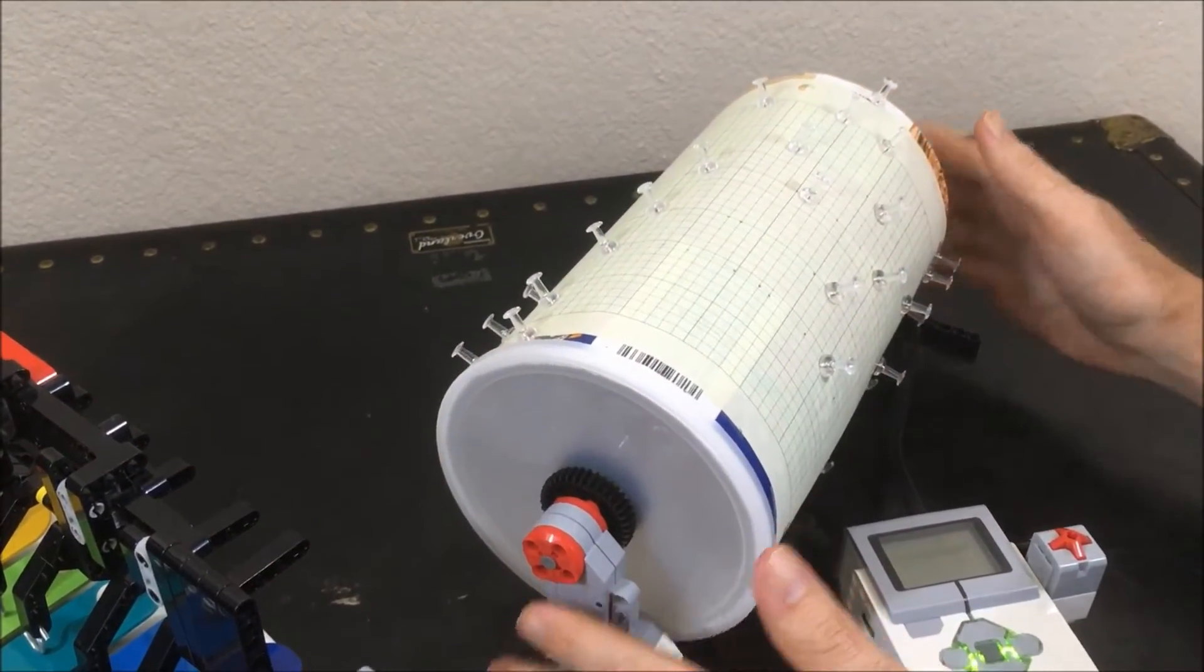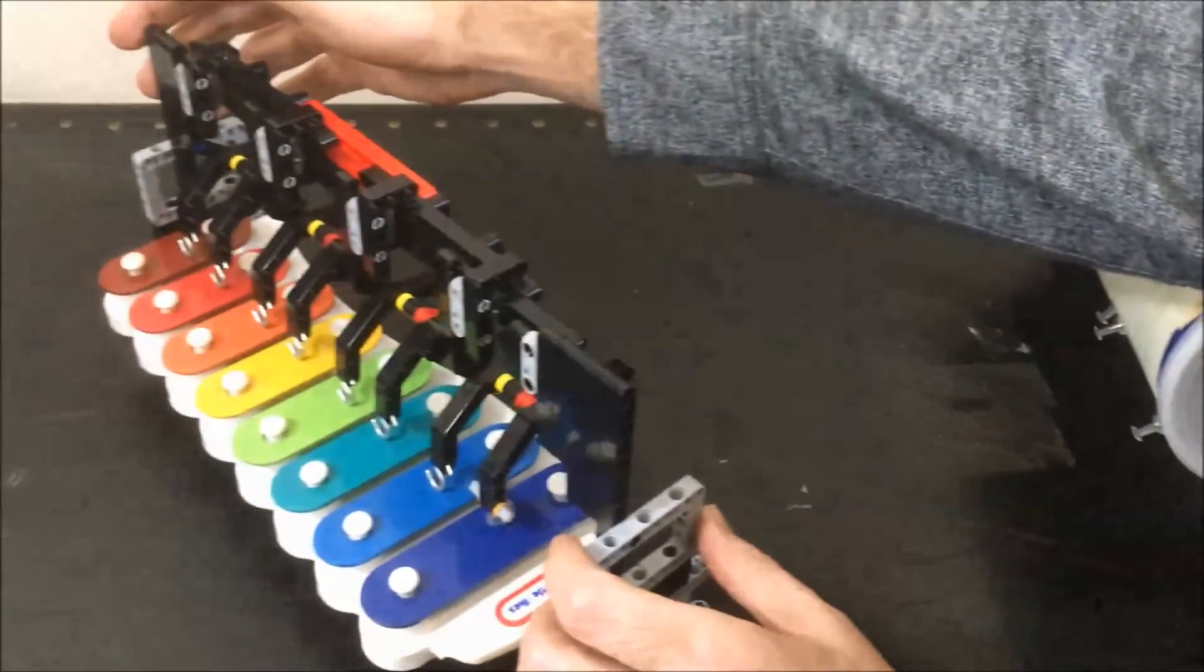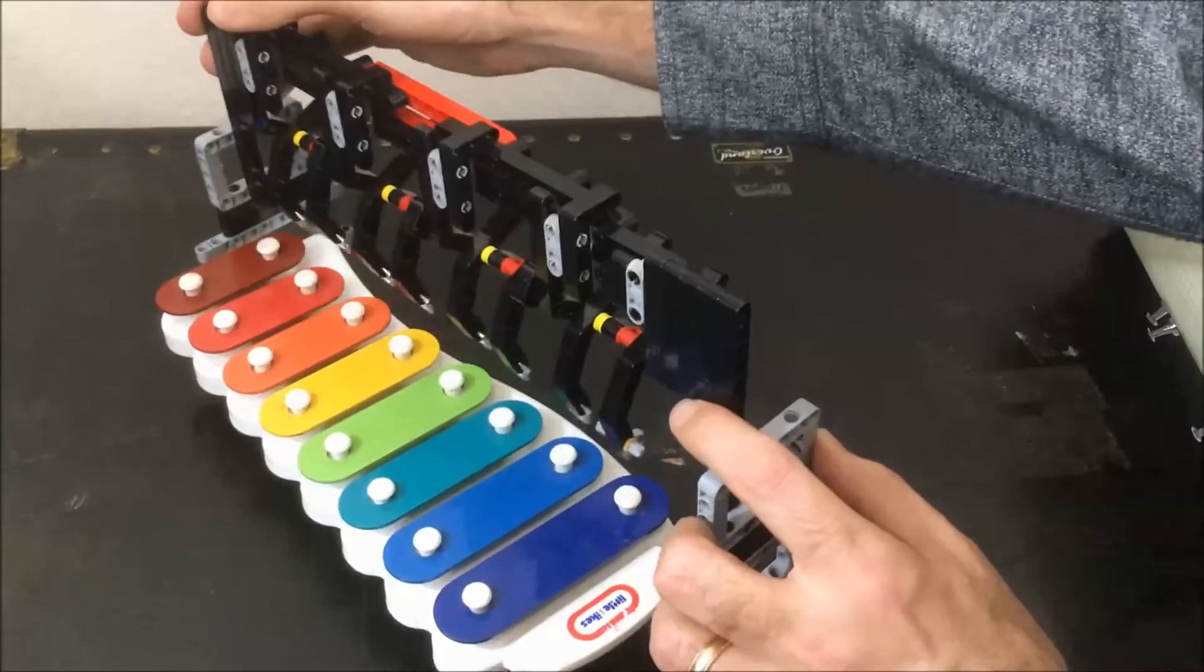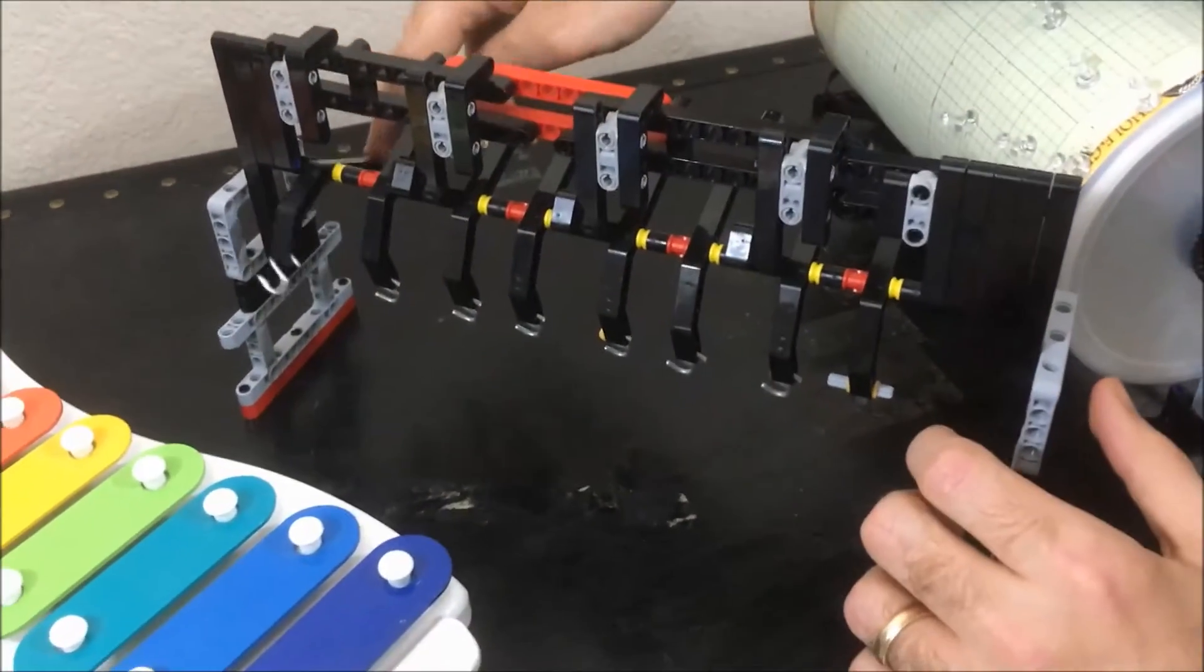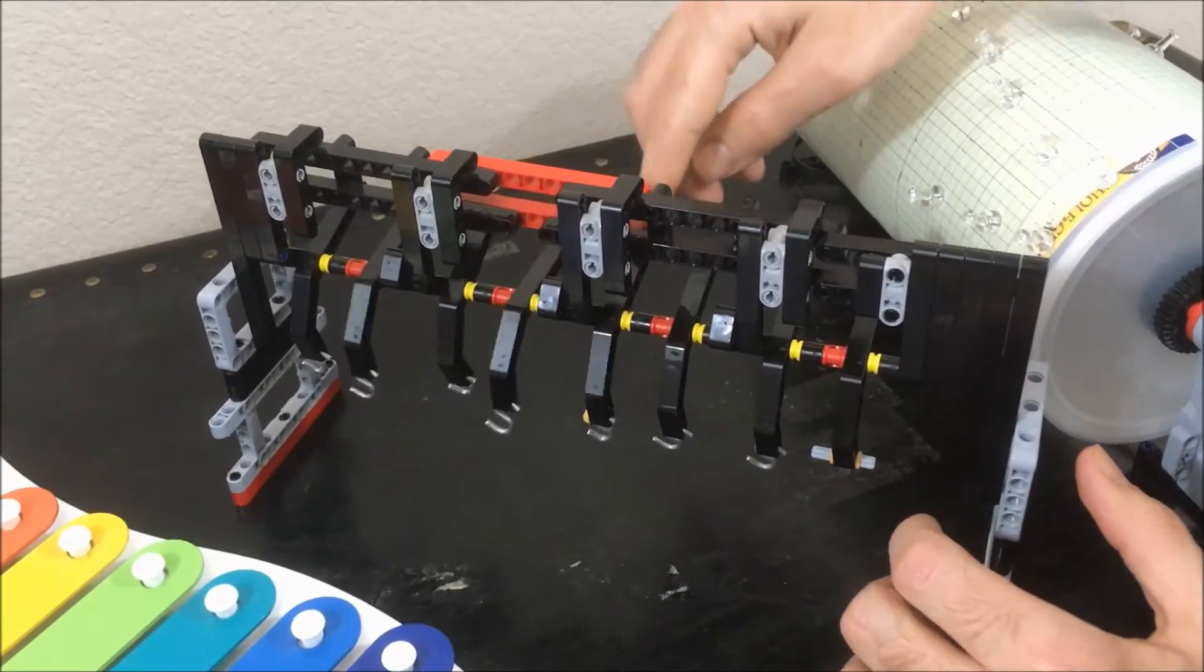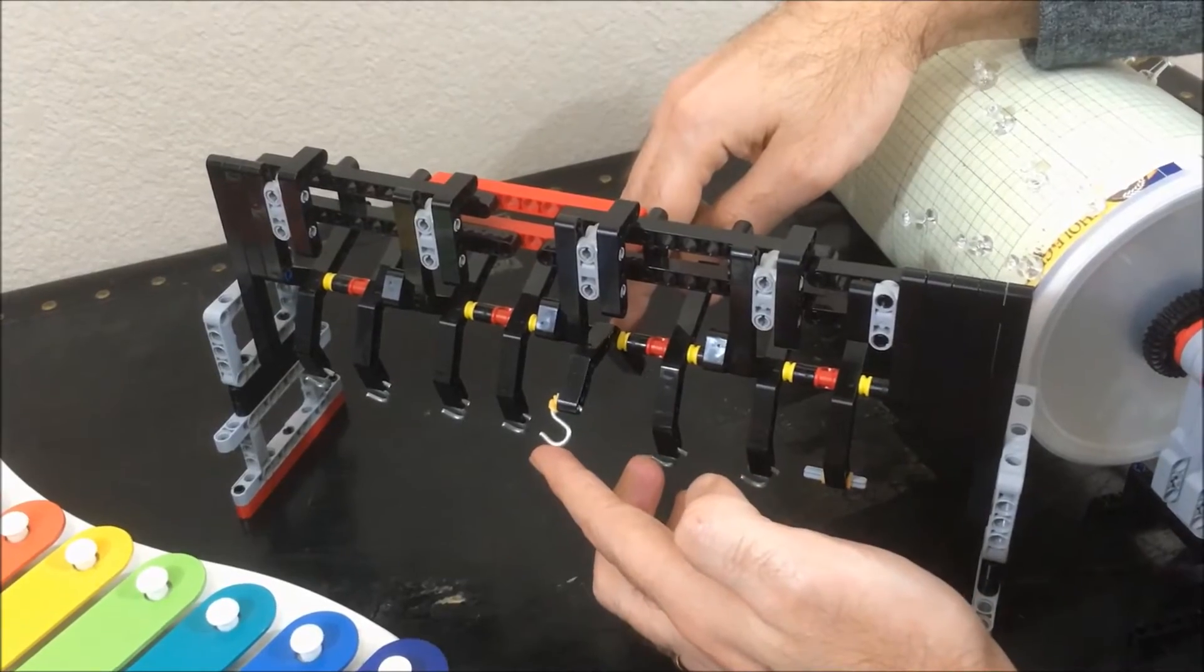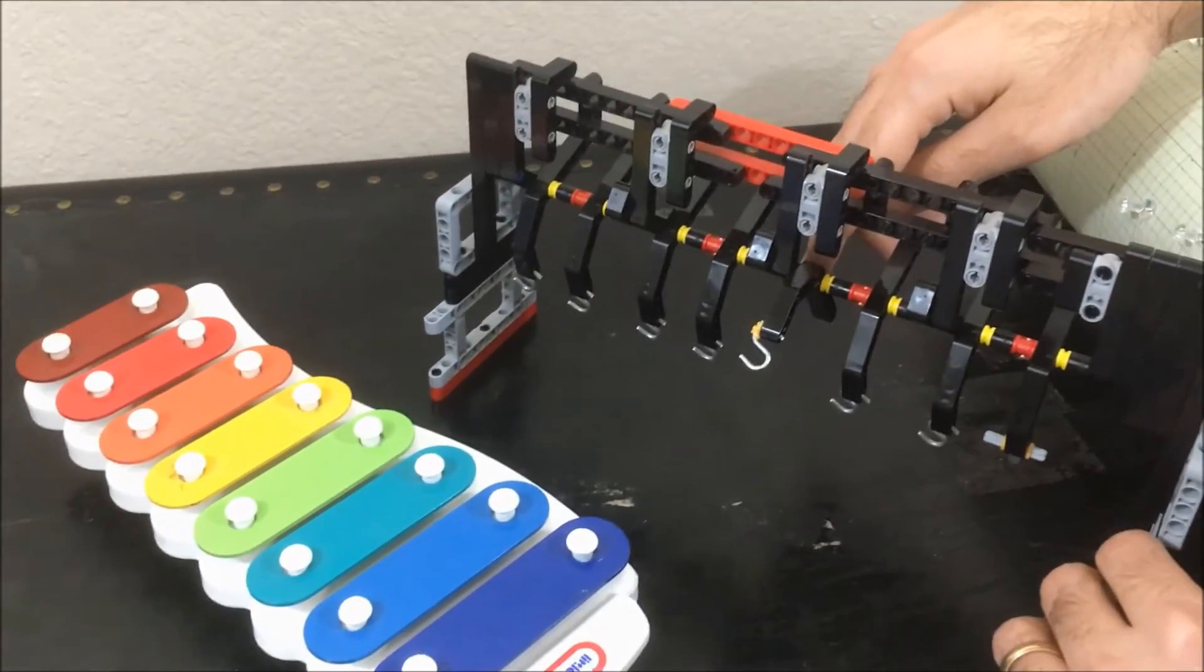So this is a pretty simple structure and then we have the portion that plays the notes. If you can see it's really just eight arms that are able to float freely and at the end of each arm we have a metal S hook and that's just to give us a better sound as we strike the xylophone.